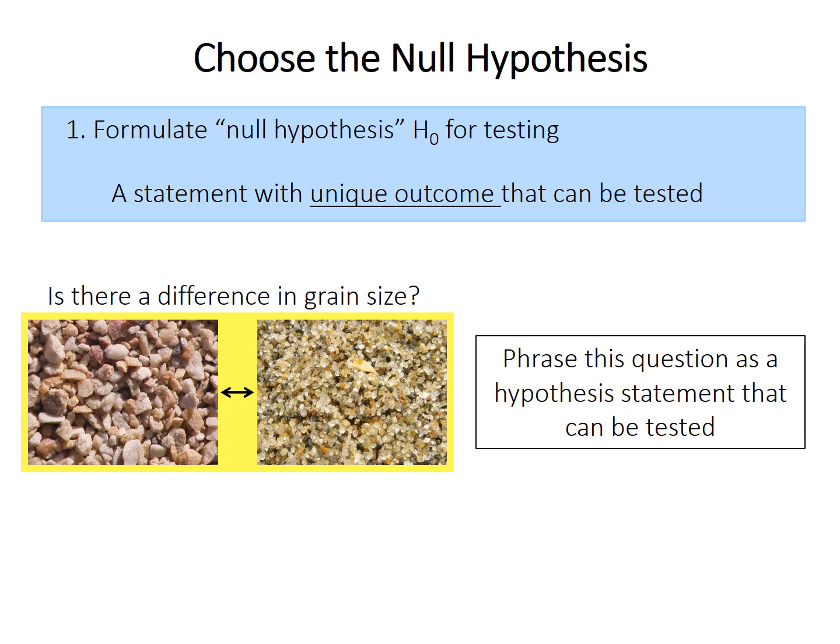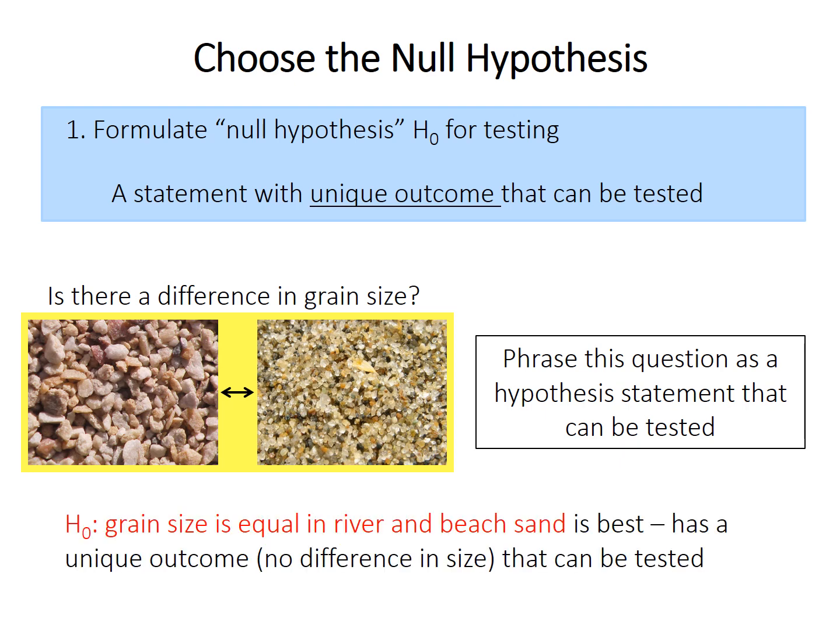So as a way of testing our confidence in the existence of the effect, we set up something called the null hypothesis, often referred to as H0. The null hypothesis is a statement that must have some single unique outcome that we can test. The most conventional form is that there is no difference between the groups — for example, the grain size is equal in the river sand and the beach sand, if we're comparing two samples like this. In theory, we could choose any unique outcome — river sand is exactly twice as large — but the hypothesis of no difference or equality is a good one because we're trying to figure out how confident we are that the effect exists. The effect is not zero. Now, we know that the null hypothesis is never going to be precisely true. The chance that these two groups are exactly the same to an infinite number of decimal places is impossible. So the null hypothesis is never true, but that's not really the point. It's a hypothetical situation that we're using for comparison.